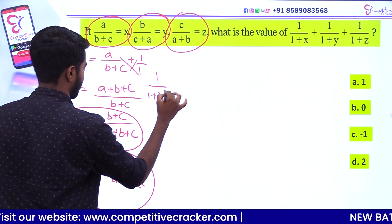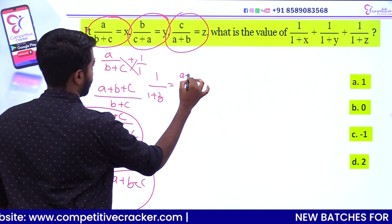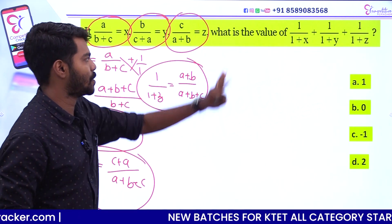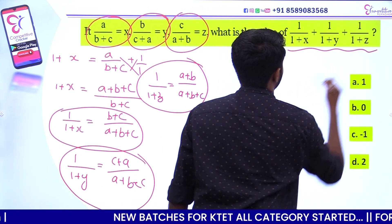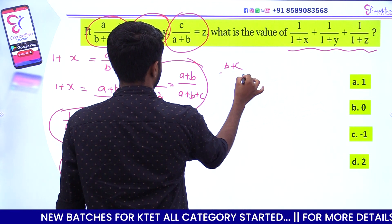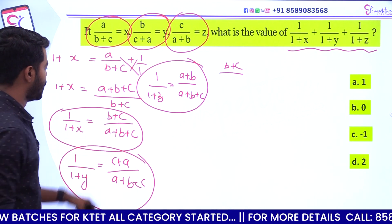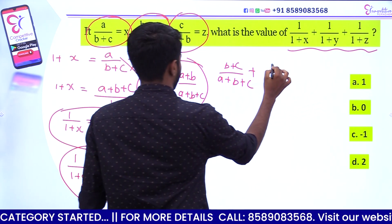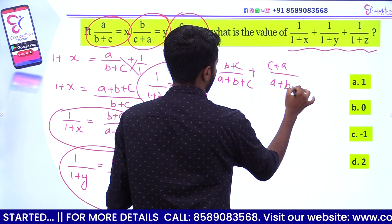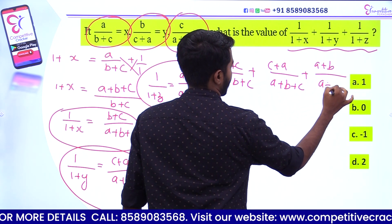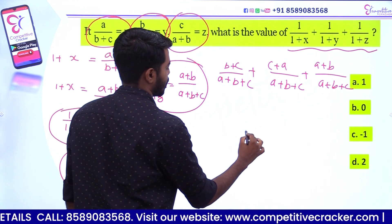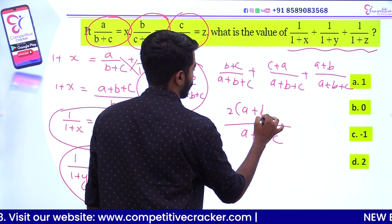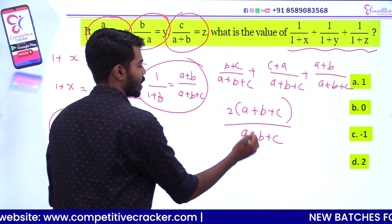So, 1 by 1 plus x equals b plus c divided by a plus b plus c, plus 1 by 1 plus y equals c plus a divided by a plus b plus c, plus 1 by 1 plus z equals a plus b divided by a plus b plus c. Adding all three, the numerator becomes a plus b plus c over a plus b plus c, which equals 1. The answer is 1.